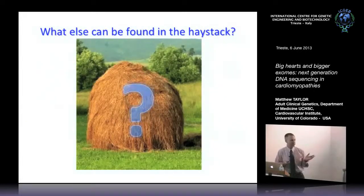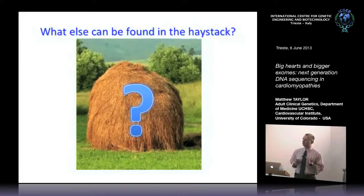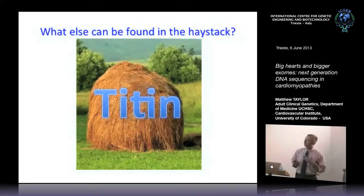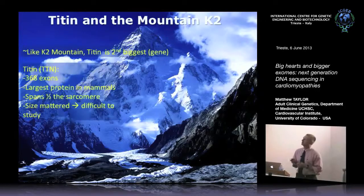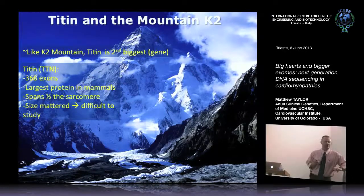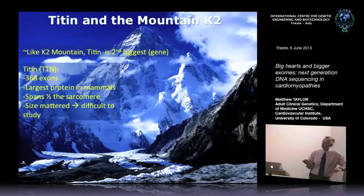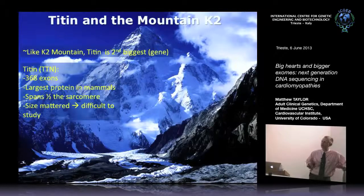Before exome sequencing, we did a project about four years ago looking at a very big gene called Titin, asking how often Titin is the cause of disease in patients. This is analogous to K2, the second biggest mountain on the planet — Titin is not the biggest gene, but it's the second biggest. It has 368 exons and encodes the largest protein in mammals, actually the third or fourth most abundant protein in the heart.